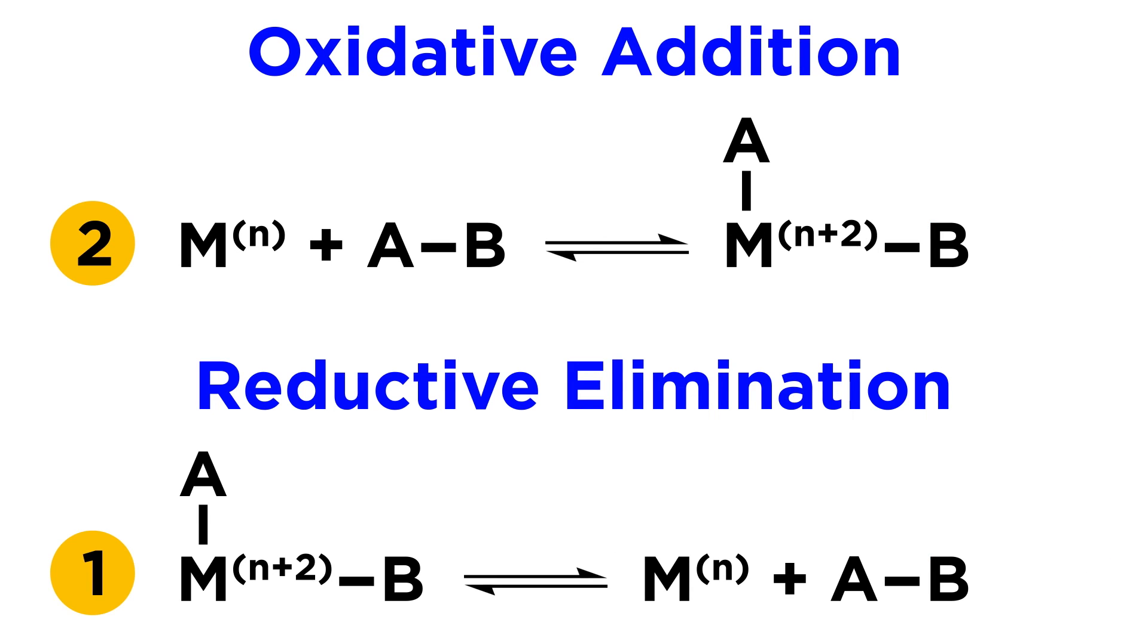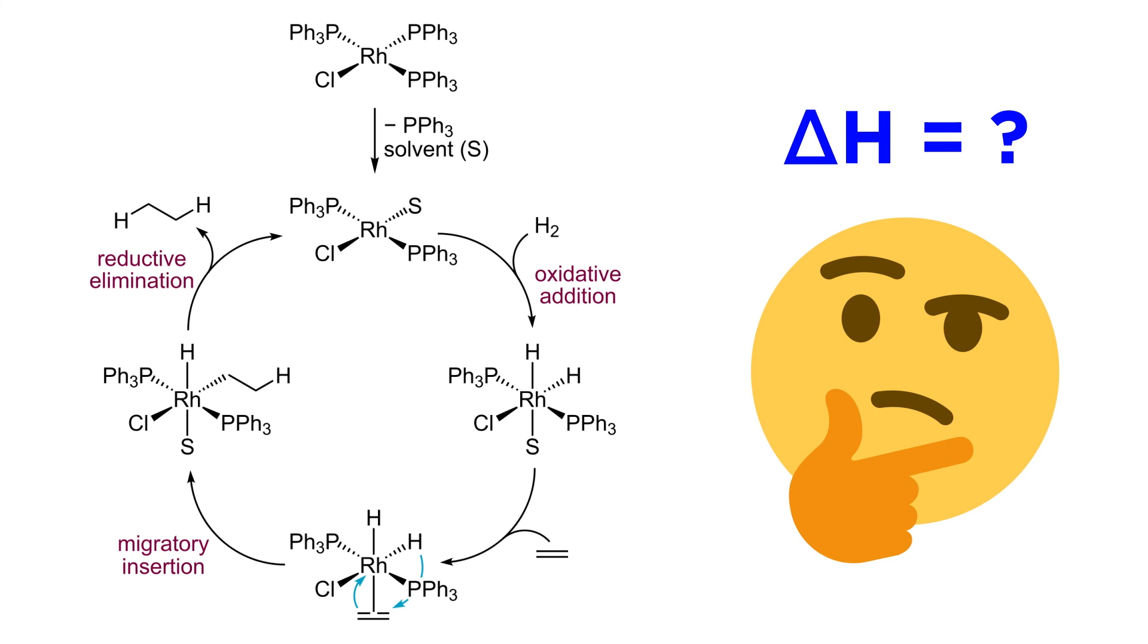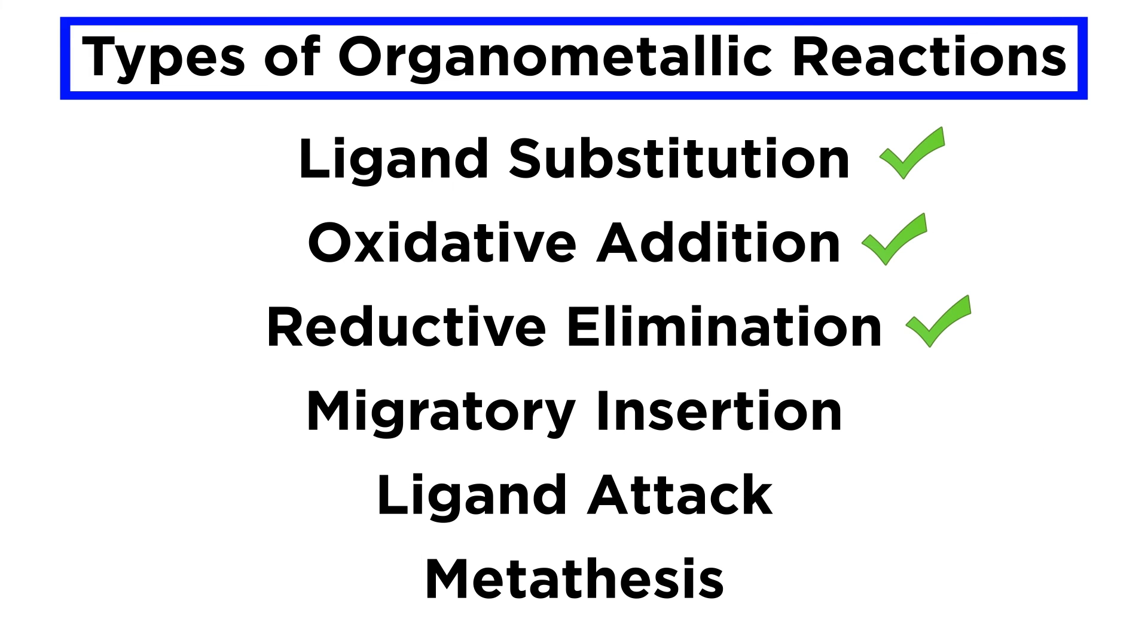And as we mentioned, sometimes reductive elimination followed by oxidative addition is a good way to substitute one set of ligands for another, if the reactions required for such a transformation are favorable. However, we will see later that in some catalytic cycles, steps can occur that are not thermodynamically favorable as long as the change in Gibbs free energy is negative overall. But for now, let's move forward and check out some more organometallic reactions.